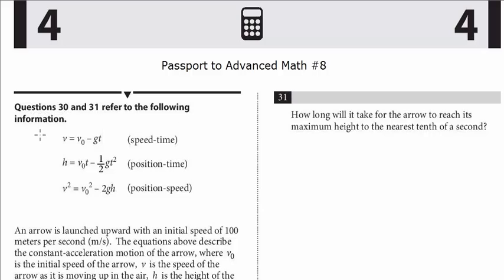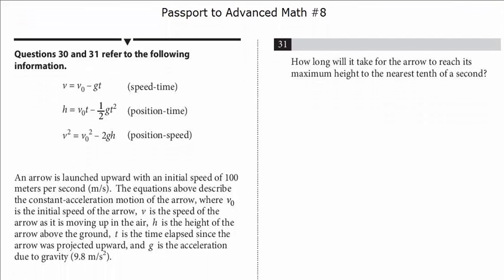Questions 30 and 31 refer to the following information. This is a paired set. An arrow is launched upward with initial speed of 100 meters per second. The equations above describe the constant acceleration motion of the arrow, where v₀ is the initial speed of the arrow, v is the speed of the arrow as it is moving up in the air, h is the height of the arrow above the ground, t is the time elapsed since the arrow was projected upward, and g is acceleration due to gravity.